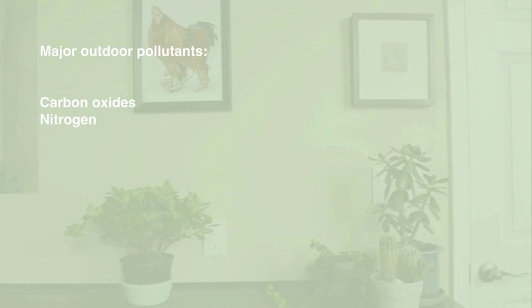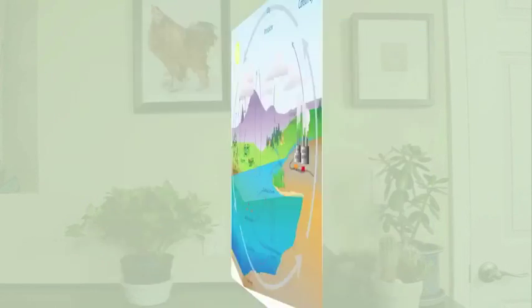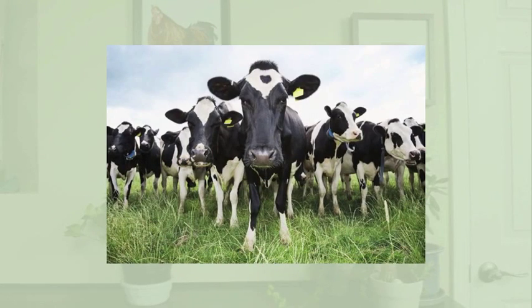Now that we know what air pollutants are, here is a list of the major outdoor pollutants. 93% of carbon dioxide in our atmosphere is a result of natural carbon cycles, while nearly two-thirds of sulfur dioxide's presence in the air is a result of human activity. VOCs like methane, a greenhouse gas, are hydrocarbons. One-third of these emissions are natural, while the other two-thirds are from human sources.